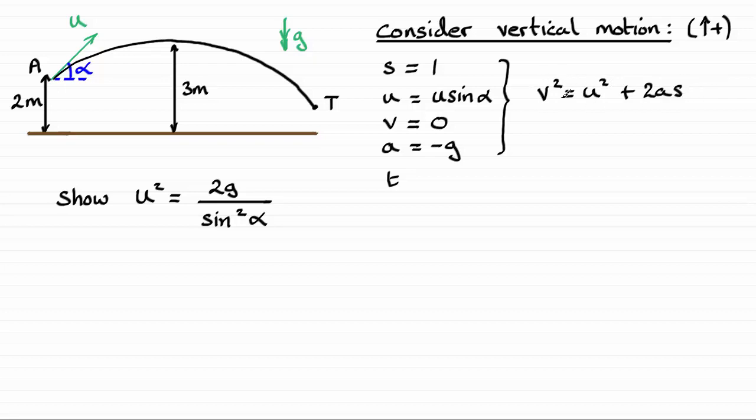For v, we just substitute in our values, we get v squared is going to be zero, equals u squared. So, that's u sin alpha all squared. And to that, we add 2as. So, we've got 2 times negative g. So, it's going to be minus 2g times the 1. So, it's just going to be minus 2g. I'll tell you what, I'll just stick that 1 in there, though, for the time being. Just to show that I've substituted it in.